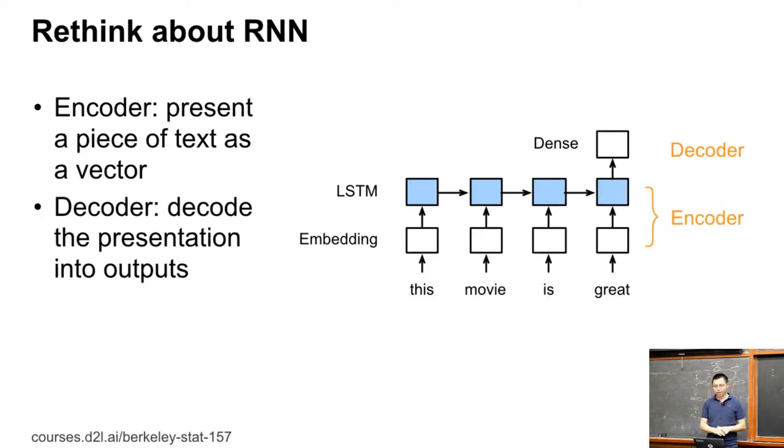Similarly, like this is the network we just showed a minute ago, given a text, how to get the classification. Now, here we only show single-directional. We actually use a bidirectional, but the idea is pretty simple.